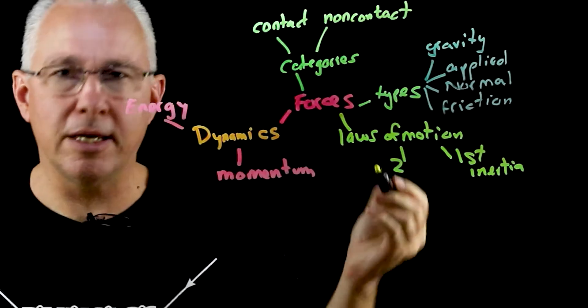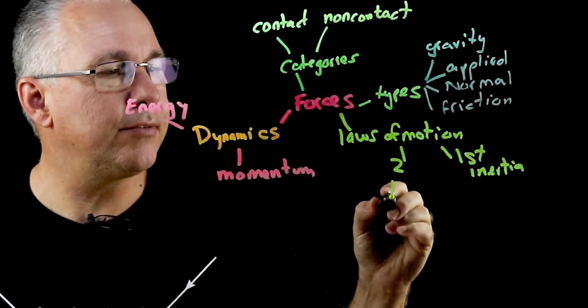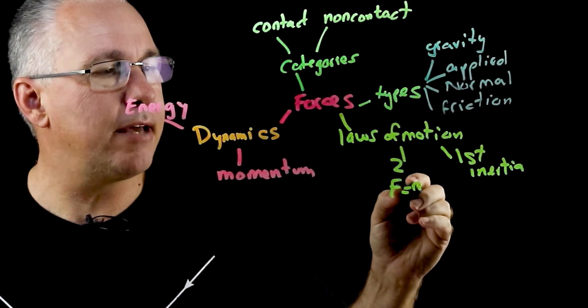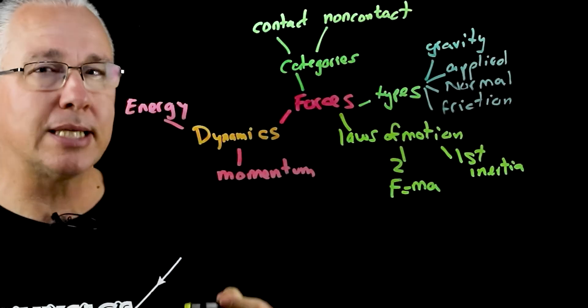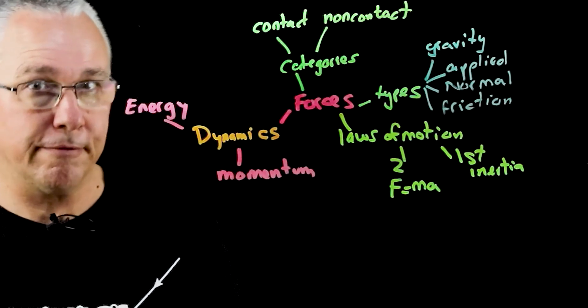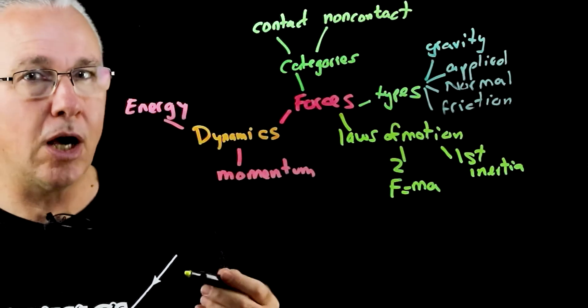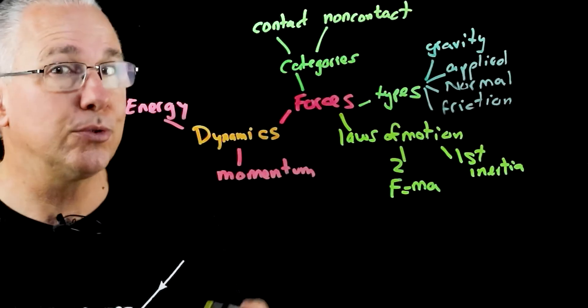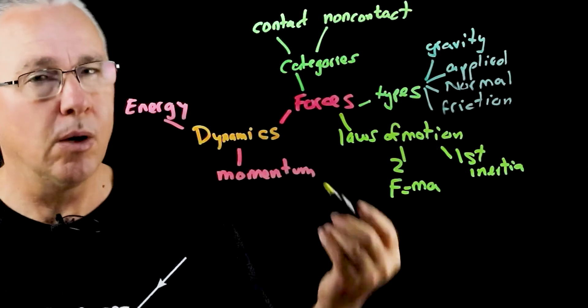Then there's the second law, and of course the second law basically is the relationship that often people write as F equals ma, but really what it's saying is that the acceleration is directly proportional to the net force acting on that object and inversely proportional to the mass of that object.